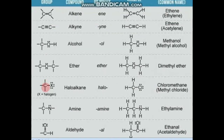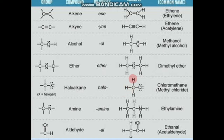When carbon is directly attached to a halogen element, this type of compound is called a halogenide or alkyl halide. The suffix or prefix used is halo-. The halogen family includes iodine, fluorine, chlorine, and bromine — all halogens belong to this family. For example, CH3 with chlorine directly attached is called chloromethane, or the common name methyl chloride.